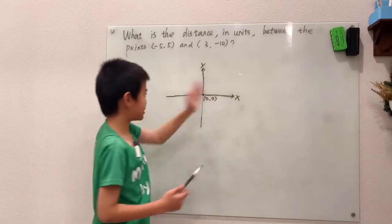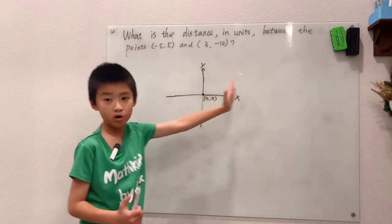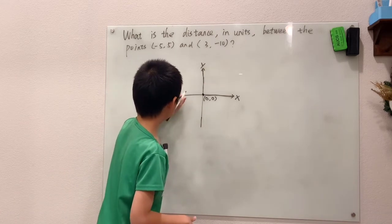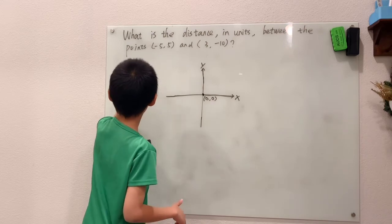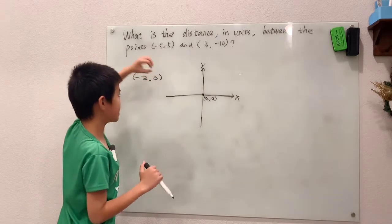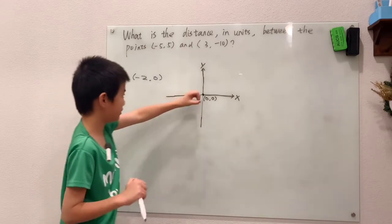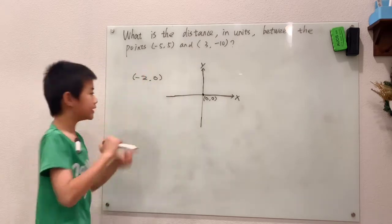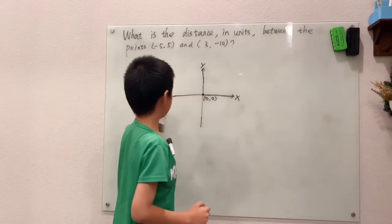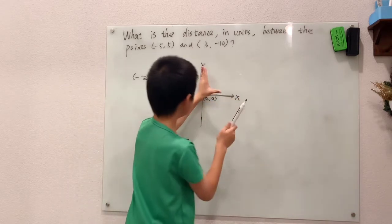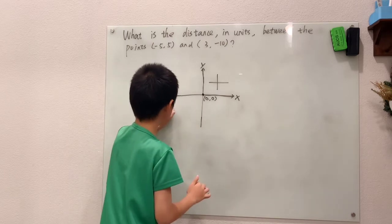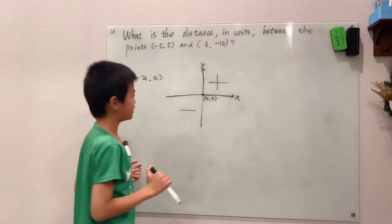The first number tells you how many points you are from the origin. So the origin is a special point. For example, negative two, zero — the second number tells you how far you are from the origin on the y-axis, so zero means you're right on the origin, and negative two means you're at x-coordinate negative two. This side is positive and this side over here is negative.